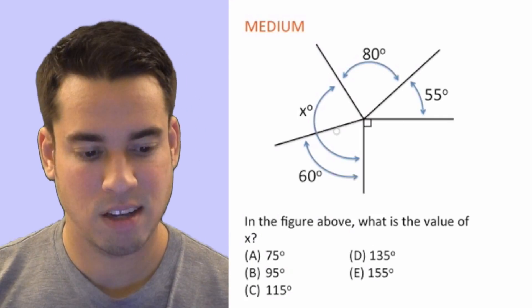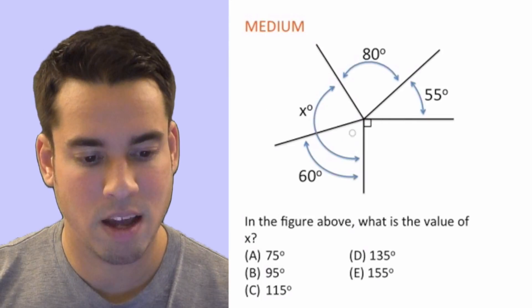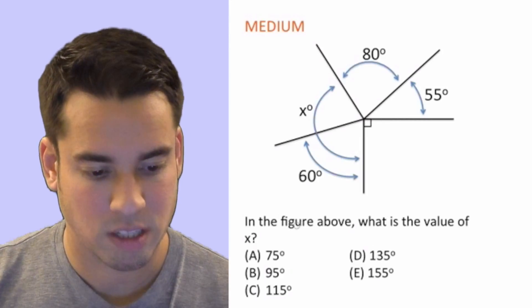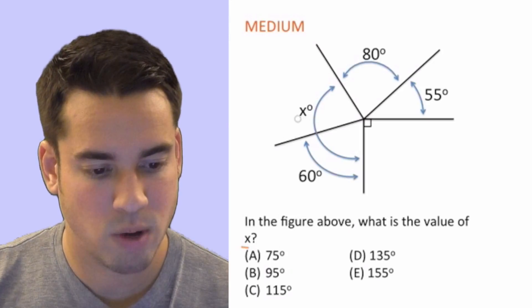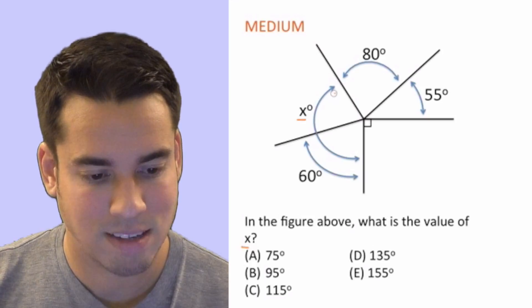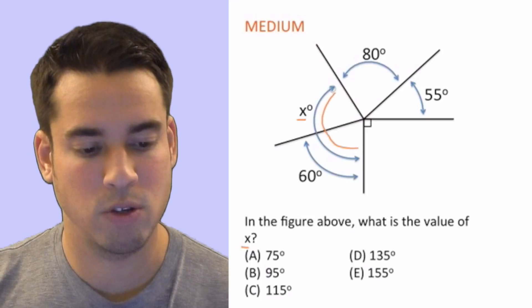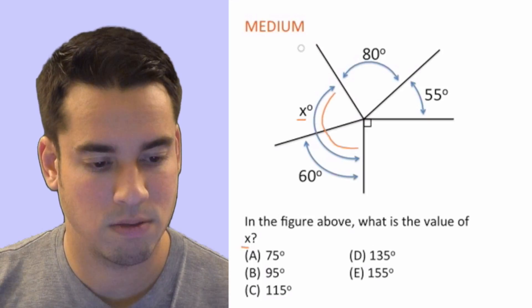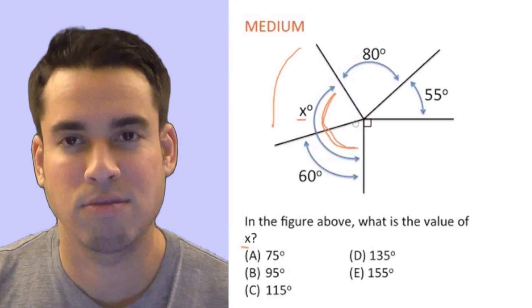Hey guys, welcome to the angles practice problems, level medium. Let's take a look at the practice problem — we have a nice diagram with an assortment of angles and line segments. The question says: in the figure above, what is the value of X? X refers to this entire angle, and it's important to notice that because, if you didn't pay attention to the arrows, you might think it was limited to just part of the figure.